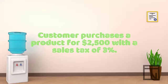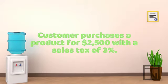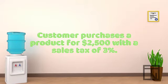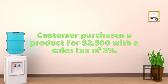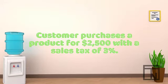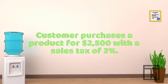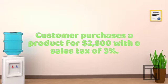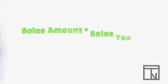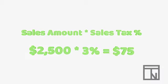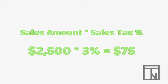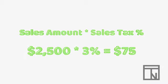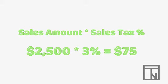Let's imagine that a customer purchases a product from us for $2,500 on account and our state charges a 3% sales tax for that kind of product. Sales tax is a percentage which is calculated using multiplication. So, $2,500 times 3% would be a sales tax amount of $75.